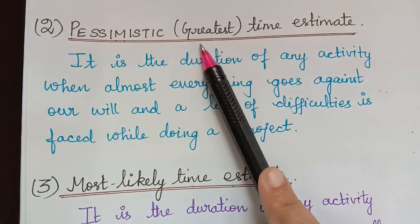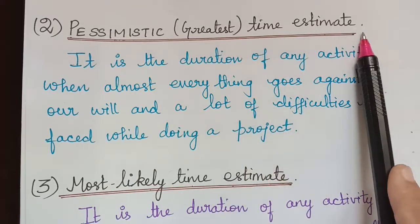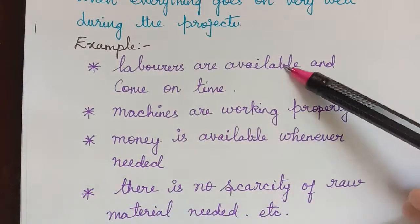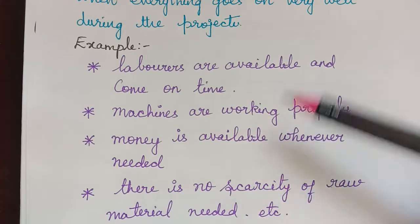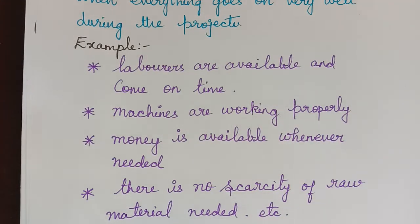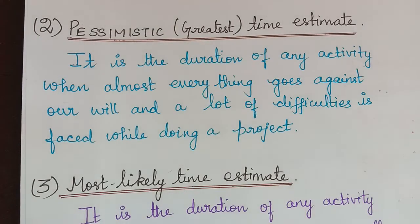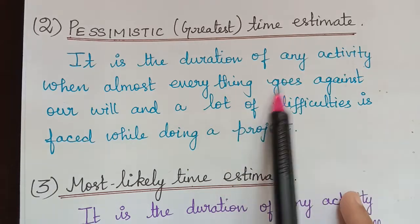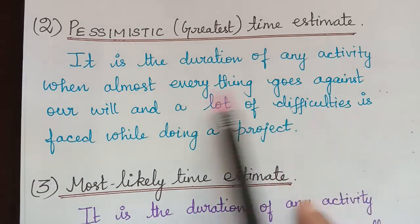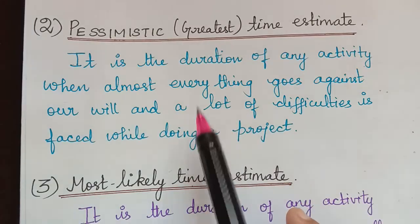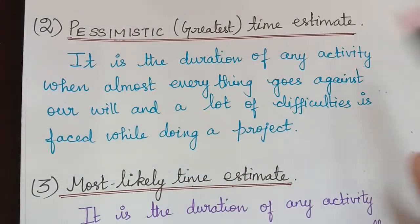Therefore it is also known as greatest time estimate. For example, where in the optimistic case everything was comfortable, if anything or everything goes wrong, we have it under the pessimistic time estimate. When everything goes against our will, it is obviously pessimistic, so it is known as pessimistic time estimate.